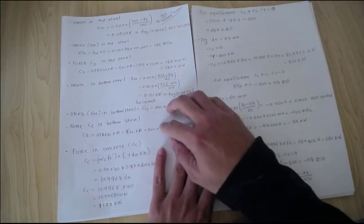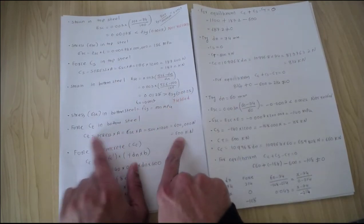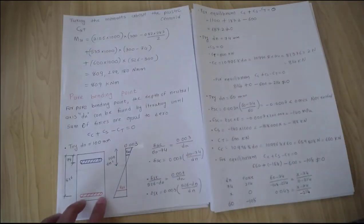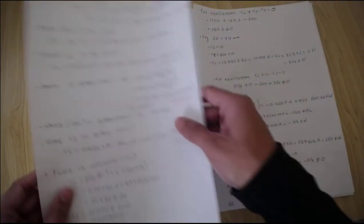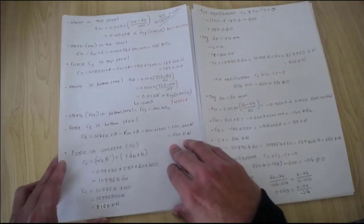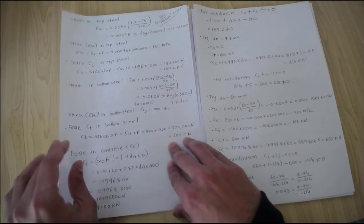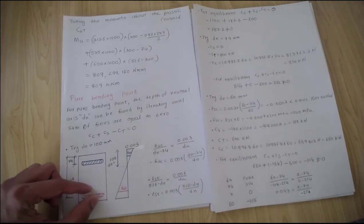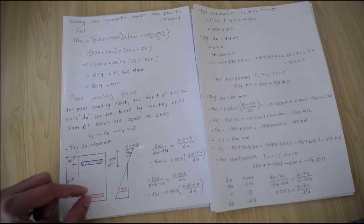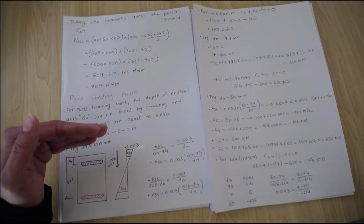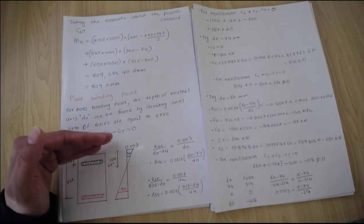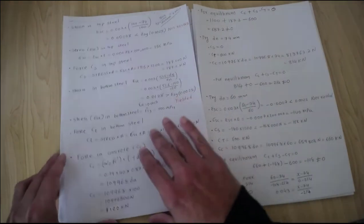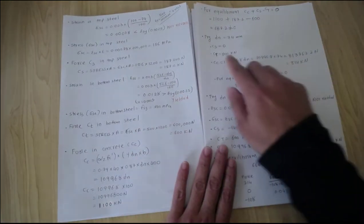The tensile force in the bottom reinforcement does not depend on dn in the same way — we need to make sure that it will yield. But as we move our neutral axis towards the top, the bottom steel will always yield. If you move your dn value towards the top steel position it will not yield and you need to make a check. But if your trial dn value is reducing, you are increasing this strain value, so we can take this 600 kilonewtons.